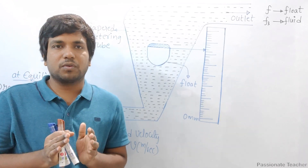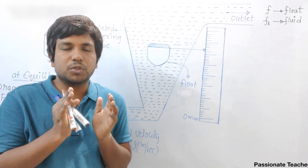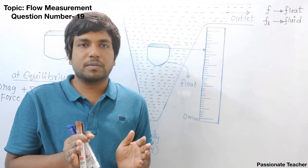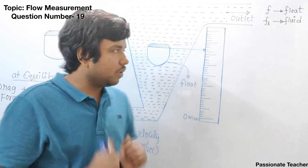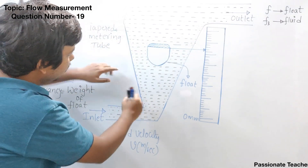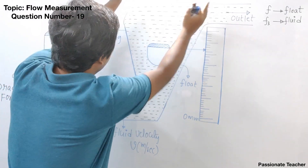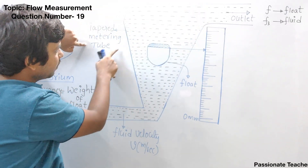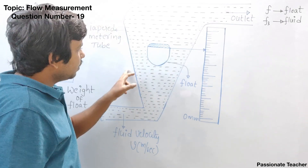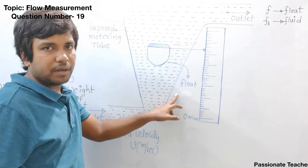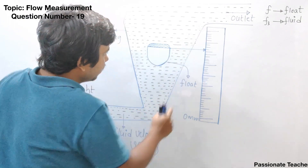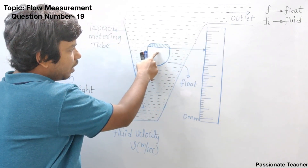To understand the answer for this question, first you should know what are all the elements or parts present in the rotometer. A rotometer consists of a tapered metering tube which has the scale on it — usually it is a glass material where the scale can be indicated and marked.